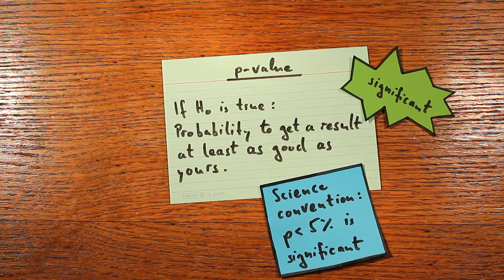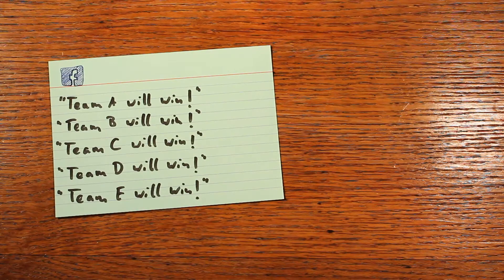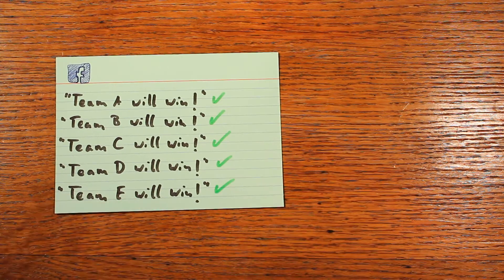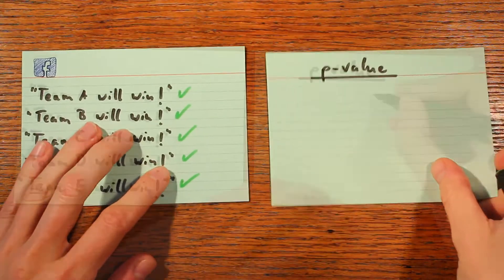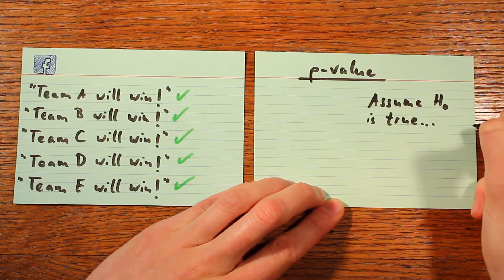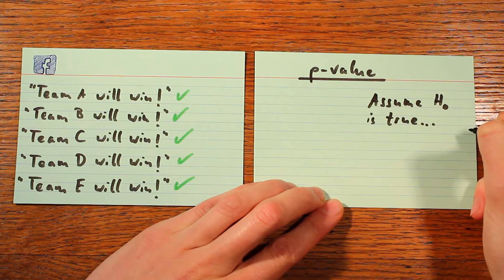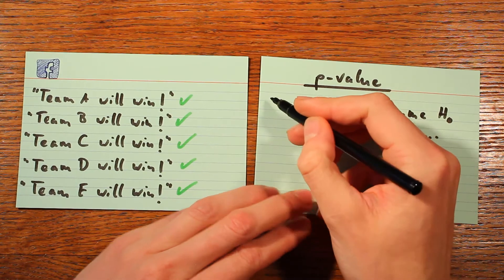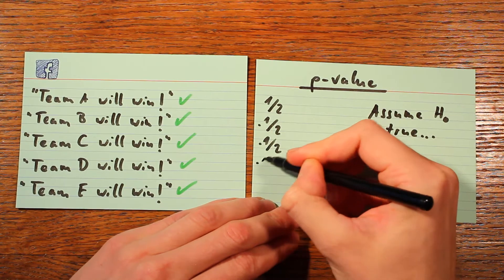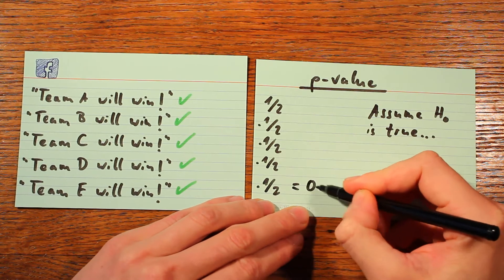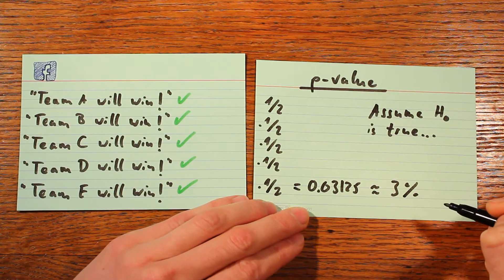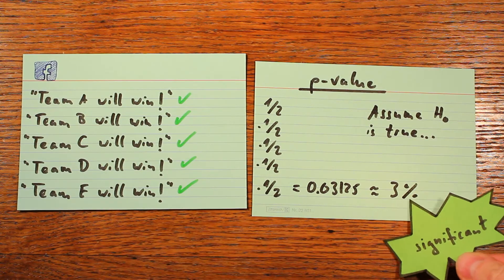Let's look at a few examples. Imagine you made five predictions and all of them were right. What's the p-value of that? If it's true that you don't have a clue and just have a 50-50 chance of getting each game right, your chances of getting all five games right would be 0.5 × 0.5 × 0.5 × 0.5 × 0.5, which equals 0.03125 — about 3%. This is a pretty low, statistically significant p-value.